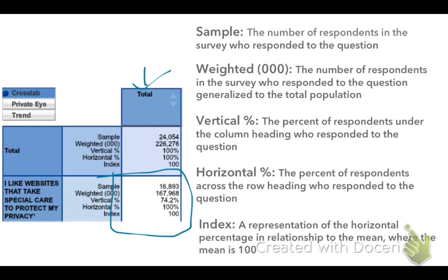Let's start by defining the terms, and we'll get to the actual meaning on the next slide. The first term is 'sample' — the sample is simply the total number of respondents to the Simmons survey. In this instance, we're looking at a total of 24,054 respondents. These people are selectively chosen to be representative of the total U.S. population, and we are able to generalize from these 24,054 to the total U.S. population.